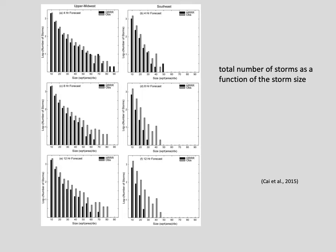This slide displays the total number of storms as a function of storm size. The left column is for the upper midwest, the right is for the southeast. Black and gray columns are for simulations and observations respectively, from top to bottom at different forecast lead times. For both regions, the model has trouble maintaining large storms — it can produce large systems for short forecast lead times, but for longer lead times the number of large storms in the forecast is much smaller than observations.